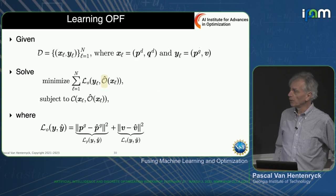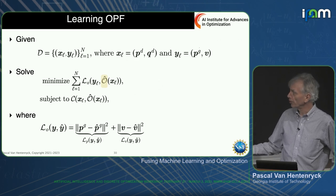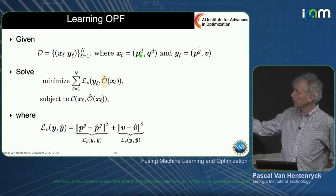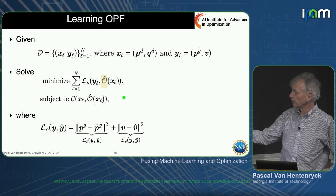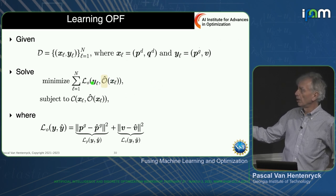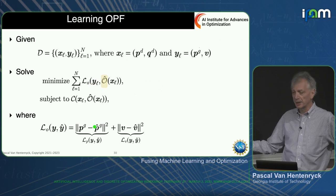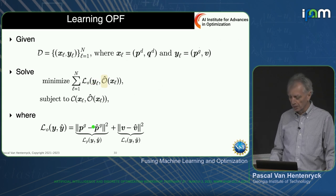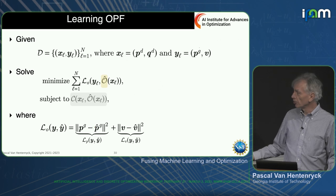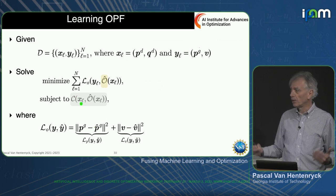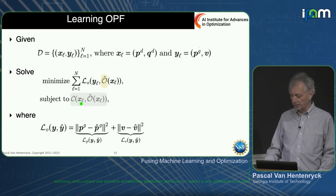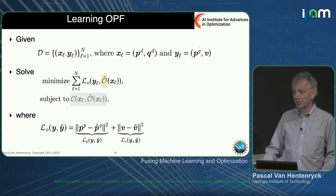There are many research papers on this. The story goes from a vanilla network to something that scales to very large networks. This is the learning problem: you see the input (demand) and output (generator set points), trying to find an optimization proxy that minimizes a loss function, being as close as possible to the ground truth. One key difficulty is that you have all these physical and engineering constraints that must actually be satisfied for the system to work in practice.